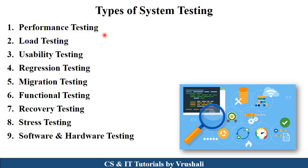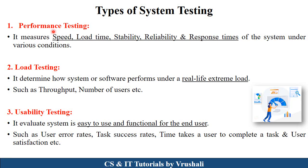The next important topic is the types of system testing. There are a total of nine types of system testing. The first type is performance testing. Take the example of WhatsApp — when you click on the WhatsApp application or website, it opens within a second, meaning it has good load time and speed. WhatsApp also provides different features usable for customers, meaning it has good stability and reliability. You can use features like status, audio call, and video call quickly, meaning it has a good response time. This is called performance testing — they test all these parameters of a particular product.